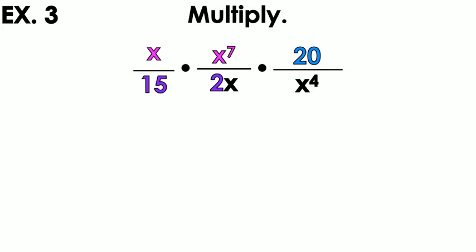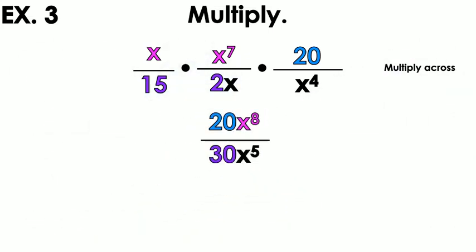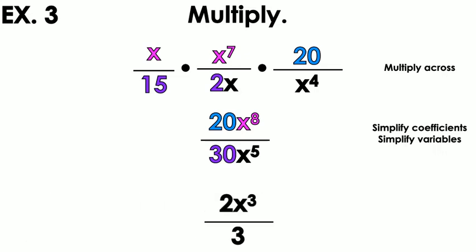Example 3 — we're back to just monomials. No pluses or minuses in the numerators or denominators, so I multiply straight across. x times x to the 7th times 20 gives 20x to the 8th on top. 15 times 2 is 30, and x times x to the 4th is x to the 5th on the bottom. Simplifying 20 over 30: divide by 10 to get 2 over 3. For the variable, x to the 8th over x to the 5th: 8 minus 5 gives x to the 3rd.